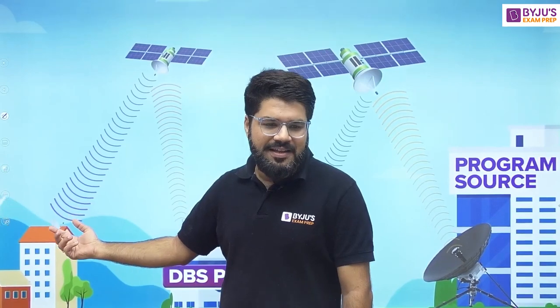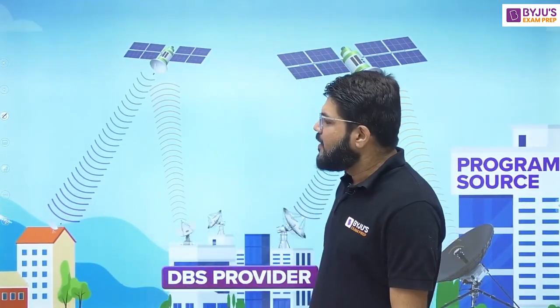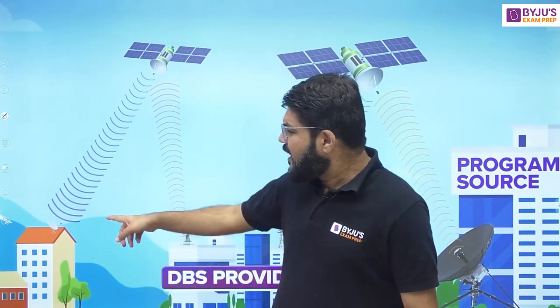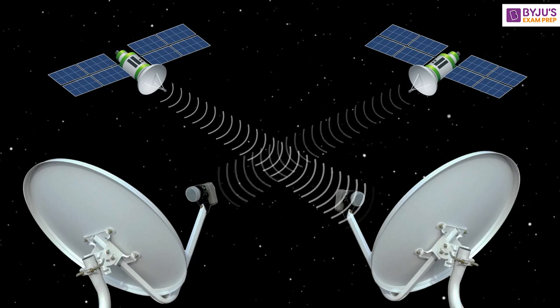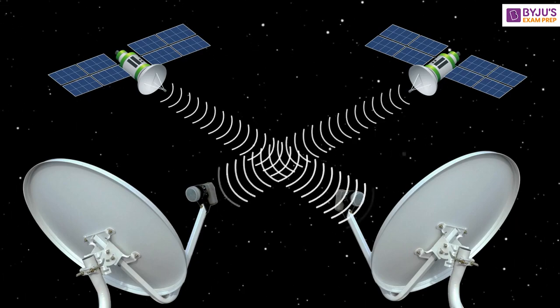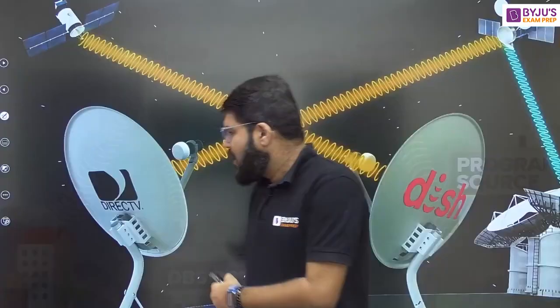Once the signal is transmitted through the DBS provider's transponder, it's the end user's turn to receive the signal. To receive the signal from Tata Sky, Dish TV, etc., we need to install the corresponding parabolic dish receiving antenna. A very important point: the antenna installed on the terrace or balcony has to be angled in a direction corresponding to that provider's transponder. If you go outside, you may find nearby dishes from different providers — Dish TV, Tata Sky, Airtel — all angled differently because each points to its own transponder.